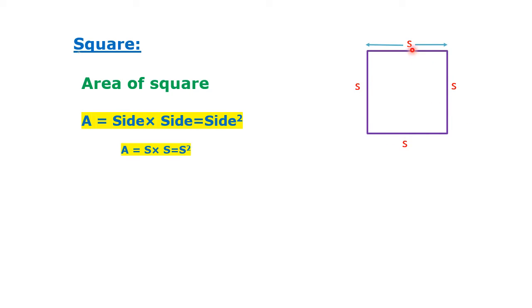Square. Area of square A equals side times side, which equals side squared. So A equals S times S equals S squared.